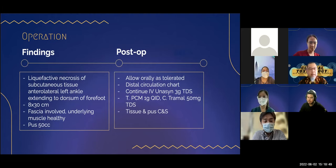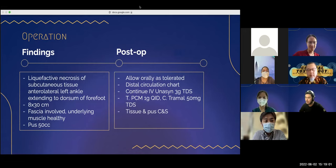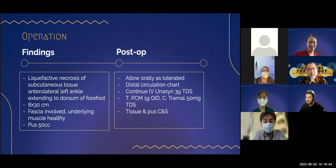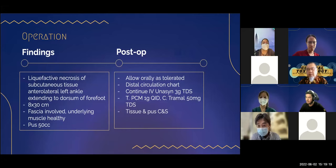Did we grow any organism from the culture? The result was still pending the last time I saw the patient. It would be nice to follow up to see what organism grows. From our past experience, the most common organism we isolate is Morganella morganii bacteria. It will be very interesting to see which organism grows in the tissue culture and the aspirate.